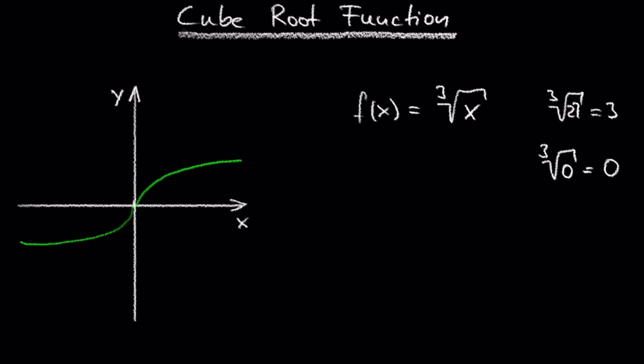Now it's getting interesting. What is the third root of negative 27? The third root of negative 27 is negative 3 because negative 3 cubed is negative 27.